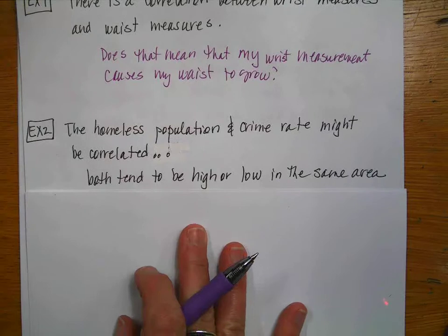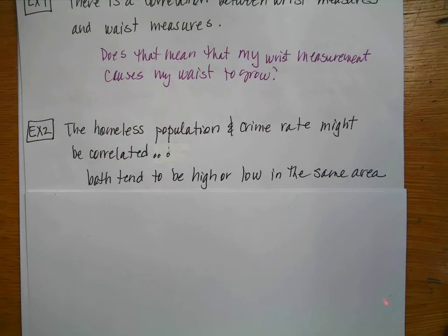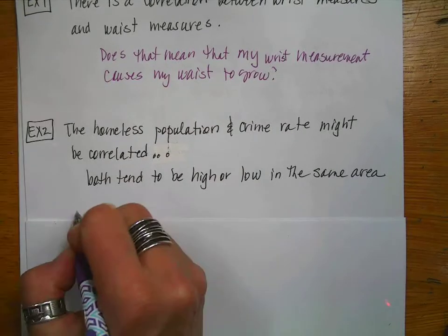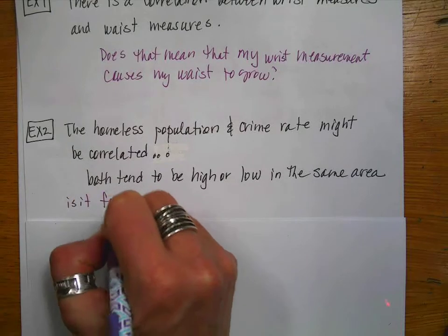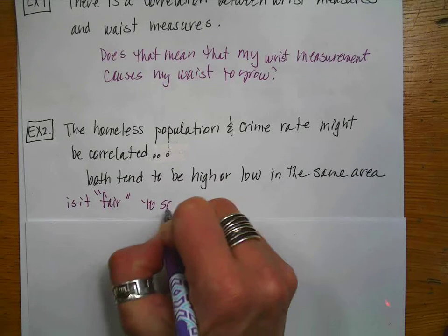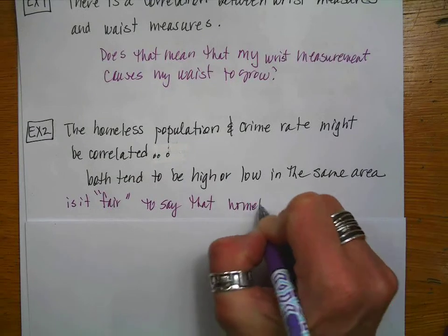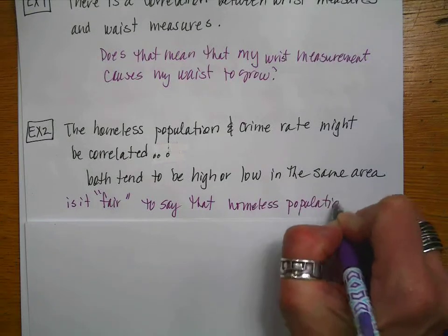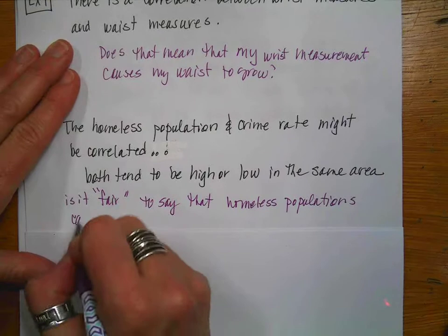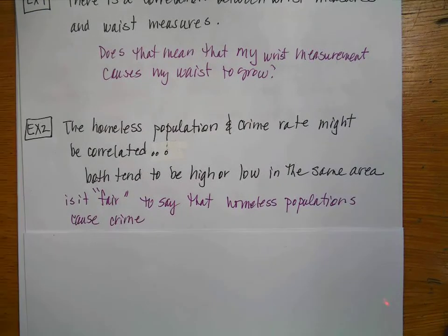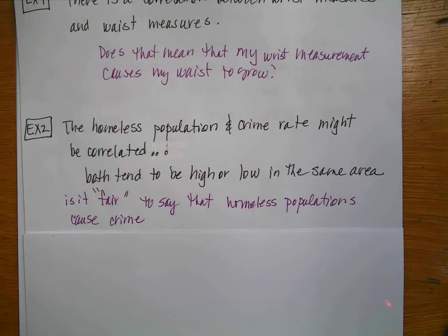For example, number two, they're trying to make a correlation between the homeless population and crime rate. So the homeless population and the crime rate might be correlated. Both tend to either be high or low in the same area. But then I would ask you to consider, is it fair to say that the homeless populations cause crime?